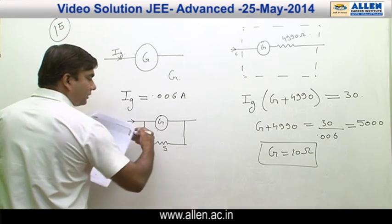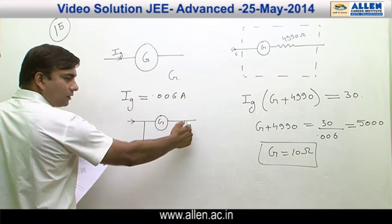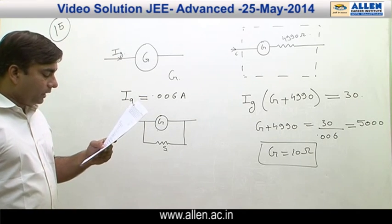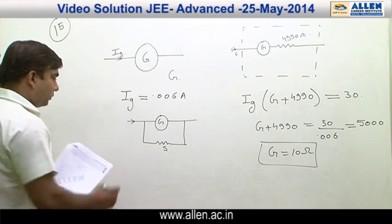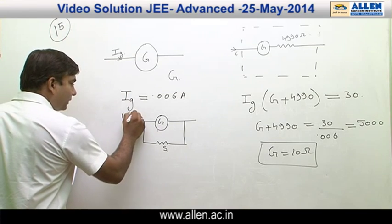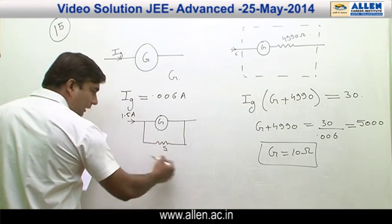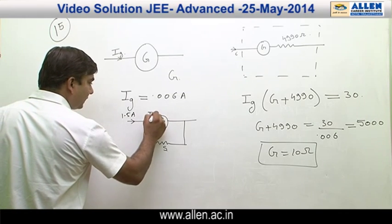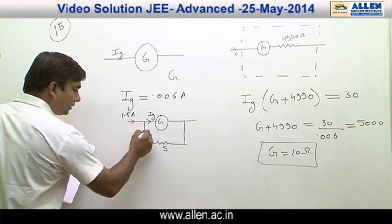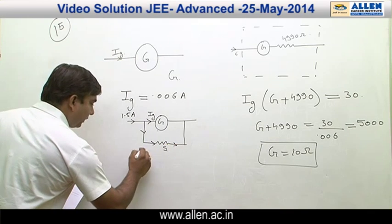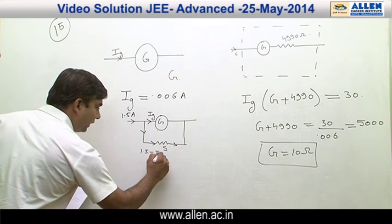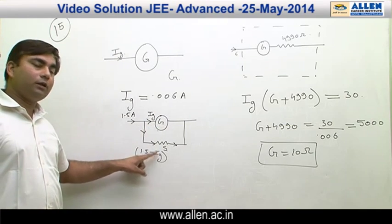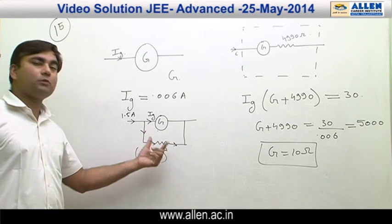The current enters and is divided into two parts: the lesser current moves through the galvanometer giving us the reading. When 1.5 ampere current is coming in, the device shows full scale deflection, meaning the current through the galvanometer is IG = 0.006 ampere. By Kirchhoff's law, the remaining current (1.5 − 0.006) passes through the shunt, and since both are in parallel, the potential difference across each must be equal.